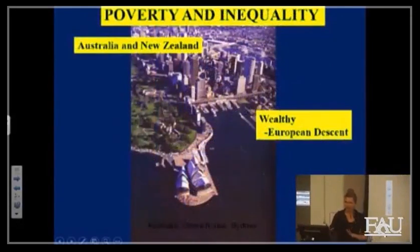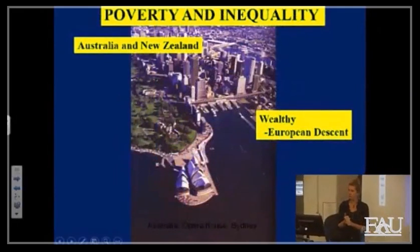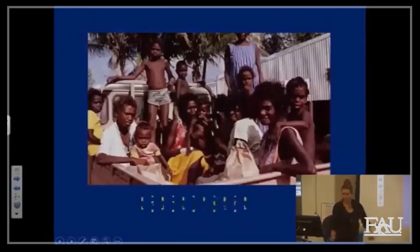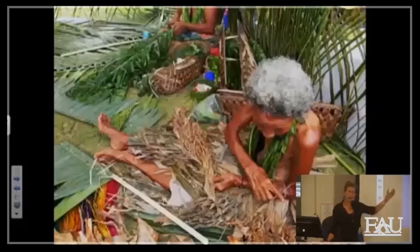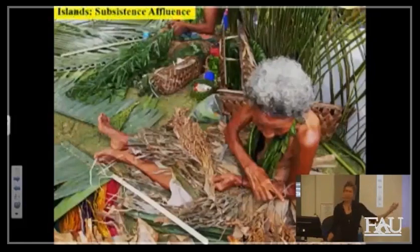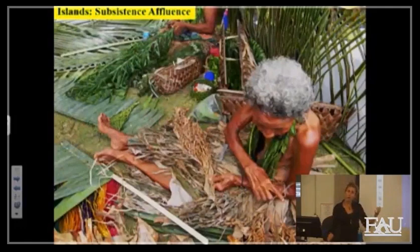Wrapping it up — poverty and inequality. The Sydney Opera House represents Australia and New Zealand, where most of the wealthier people are going to be of European descent. This image is just an Aboriginal shopping trip. Not all Aboriginal people live this way, but it's certainly not uncommon — everybody's piled into the back of a truck; they don't have their own cars.